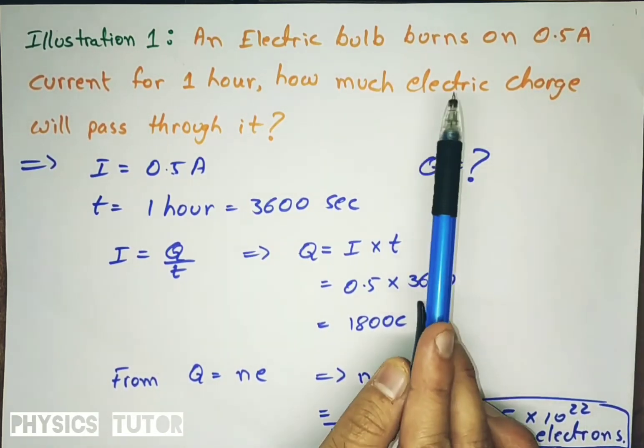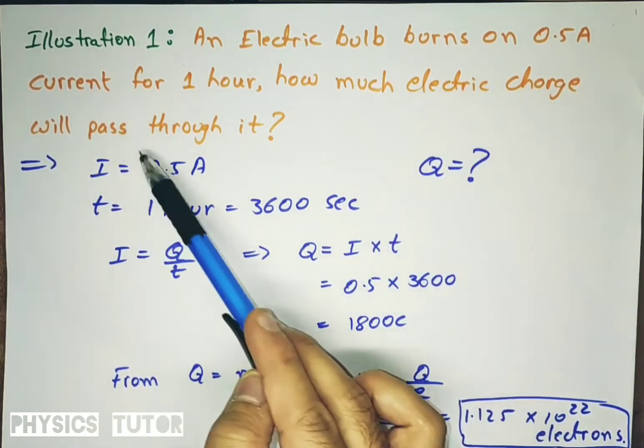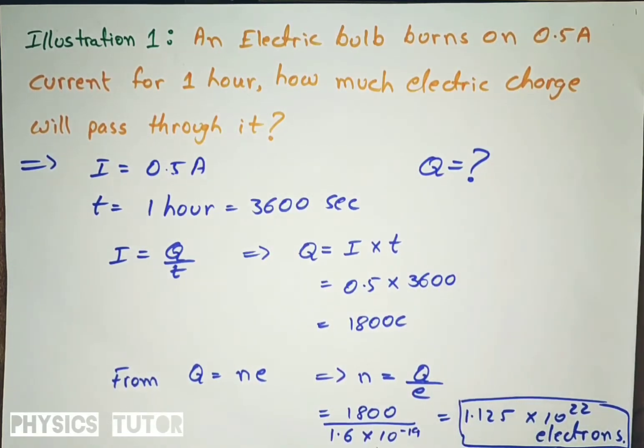But what we need to find is how much electric charge will pass through it, that is what number of electrons will pass through it. So we also have the formula Q is equal to n into e. Electric charge is equal to number of electrons into charge of electrons. So n is equal to Q by e.